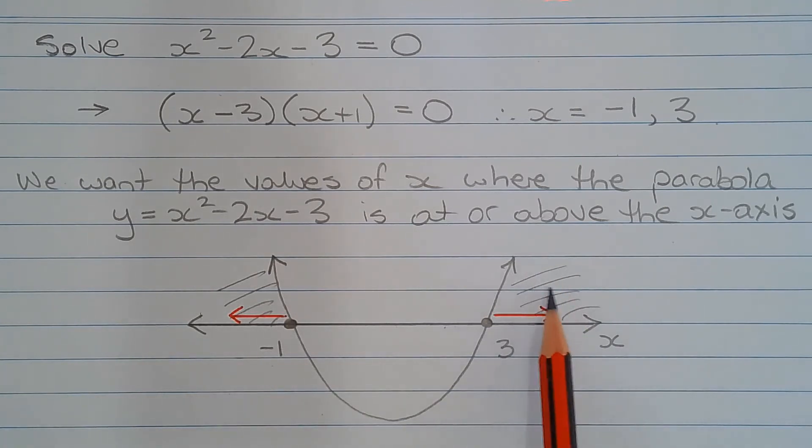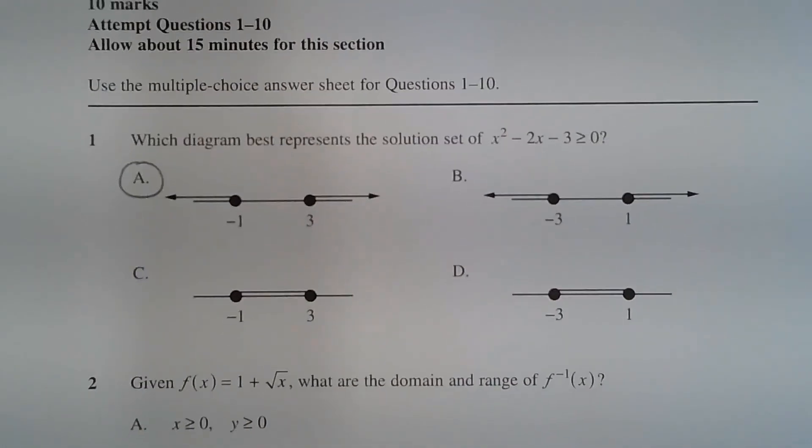The shaded region here and here represents the part of the parabola that's at or above the x-axis. And that occurs when x is less than or equal to negative 1 or greater than or equal to 3. So therefore, the answer is option A.